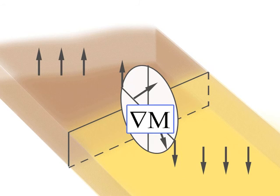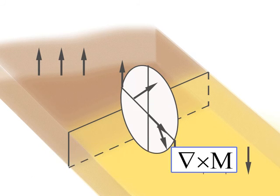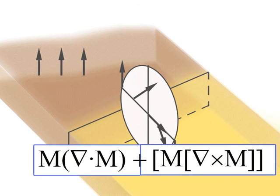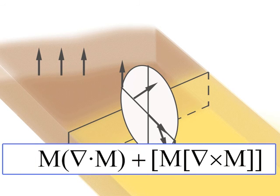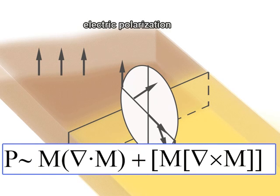Since the domain wall is a magnetic inhomogeneity, there are nonzero spatial derivatives of magnetization, nabla M. The special combination of dot and cross products of differential operator nabla and magnetization gives us electric polarization.